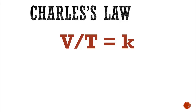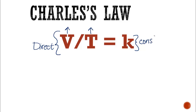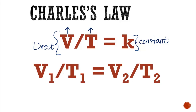Now let's look at Charles' Law, the second gas law we are covering. This relates volume and temperature. This time we are dividing them, and when two variables are divided they have a direct relationship — they are directly proportional. That means as volume goes up, temperature should also go up, because dividing them again gives us a constant K. We set up an equation very similar to Boyle's Law, except with different variables that are divided, with ones being original conditions and twos being changed conditions.